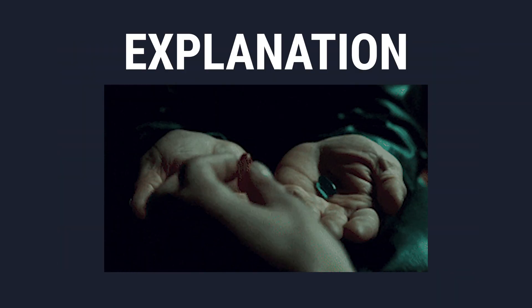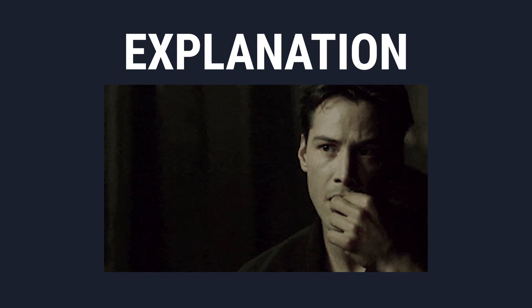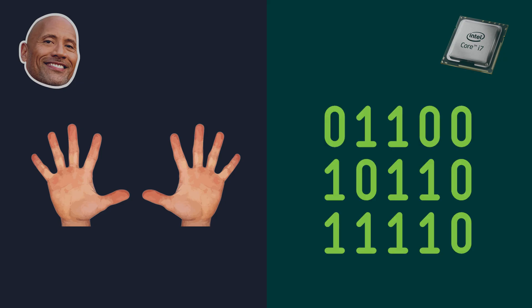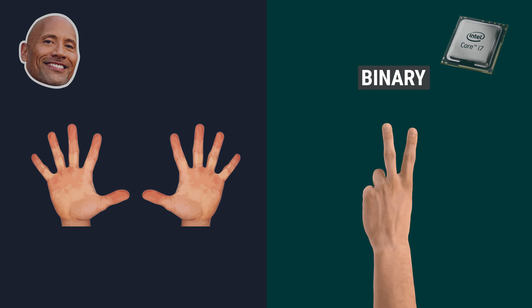This is the explanation. We all know that we count everything based on the number 10. But computers are different — they count everything with zeros and ones, and this is called binary. It's like if computers were only able to count everything with two fingers.